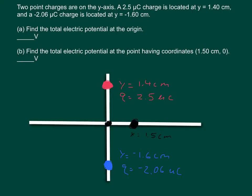Question two says two point charges are located on the y-axis. A 2.5 microcoulomb charge is located at y equals 1.4 centimeters, and a negative 2.06 microcoulomb charge is located at y equals negative 1.6 centimeters.